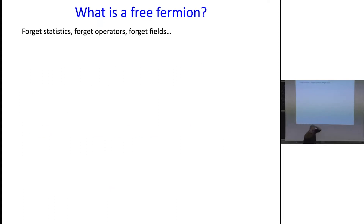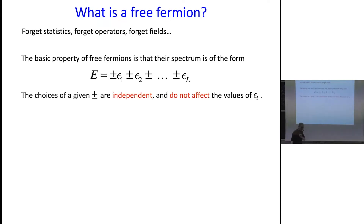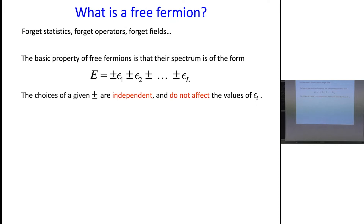I'm going to try and answer the question: what is a free fermion? In a quantum system, a free fermion will have a spectrum that looks like this. The eigenvalues of the Hamiltonian are of this form, where you have a bunch of energy levels, and the entire spectrum is given simply by choosing the plus or minus signs in front of these levels. So this would have 2^L different energies. The key thing that makes it free is the choice is independent — the choice of plus or minus is independent of the values of epsilon.